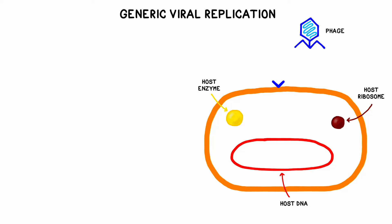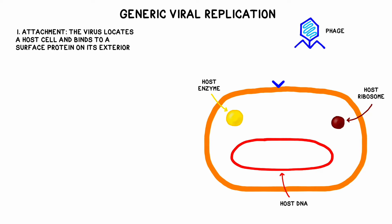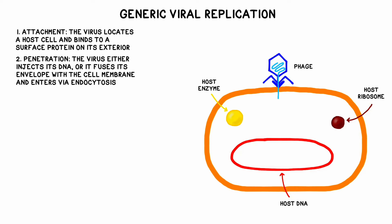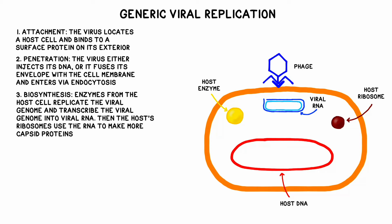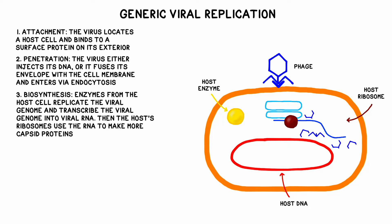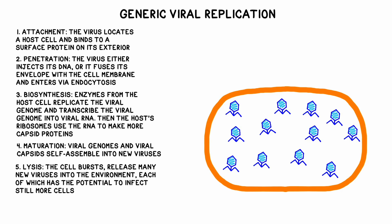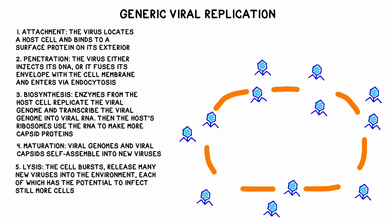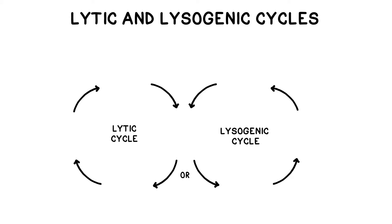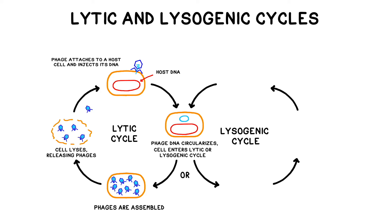While the details vary depending on the type of virus, many viruses reproduce using a similar pattern. The first step is attachment, where the virus locates a host cell and binds to a surface protein on its exterior. The next step is penetration — the virus either injects its DNA or it fuses its envelope with the cell membrane and enters via endocytosis. The third step is biosynthesis: enzymes in the host cell transcribe the viral genome into viral RNA and also make copies of the viral genome for later assembly, then the host's ribosomes use that viral RNA to make more capsid proteins. Step four is maturation, where the viral genomes and viral capsids self-assemble into new viruses. The final step is lysis, where the host cell bursts and releases many new viruses into the environment, each of which has the potential to infect still more host cells. This basic model of replication is known as the lytic cycle, and it culminates in the death of the host cell.